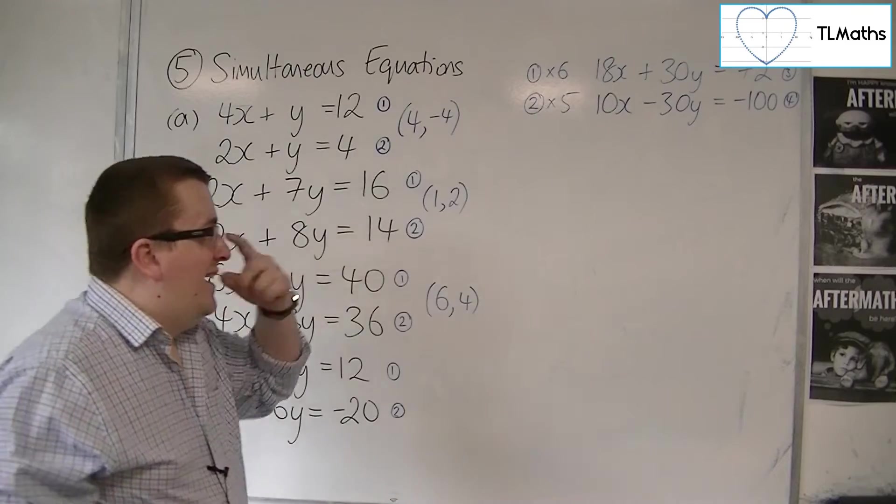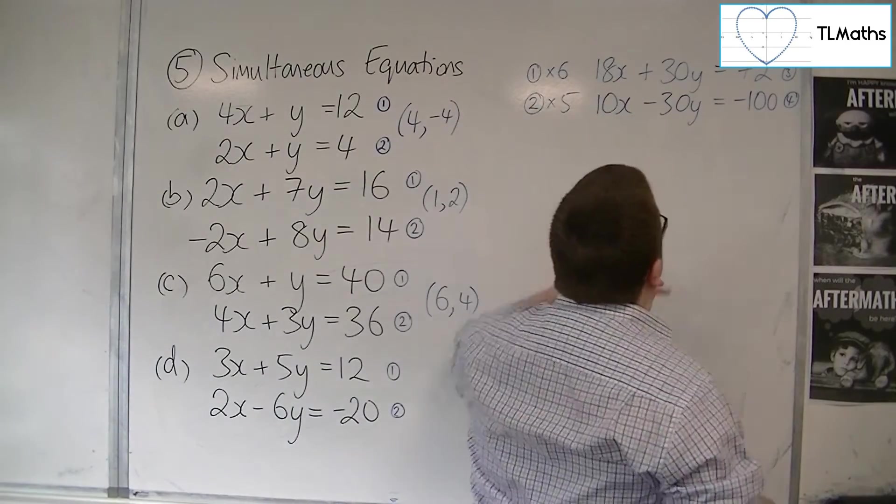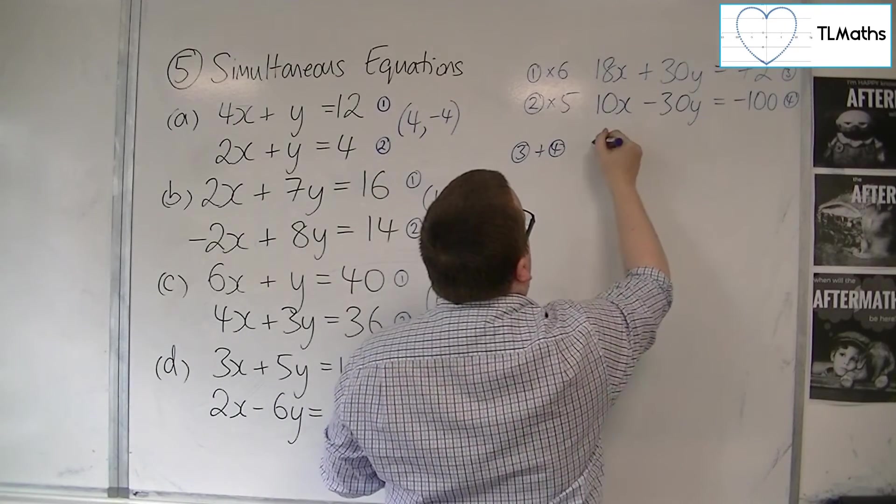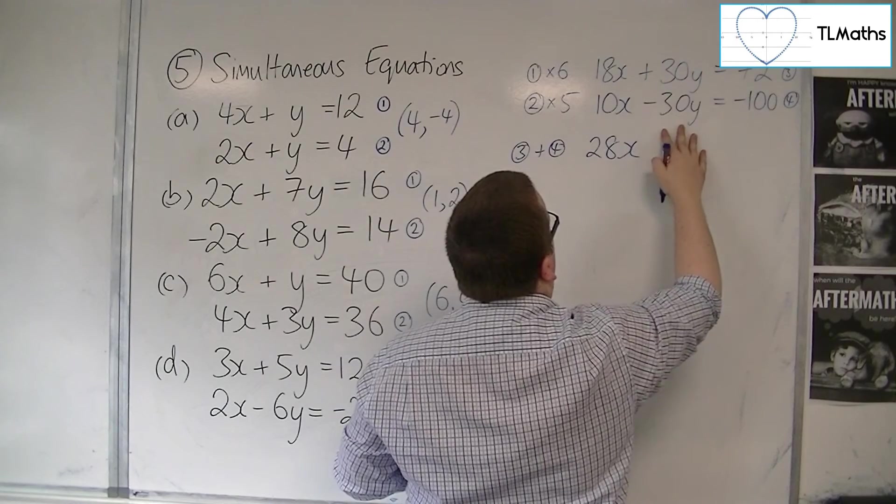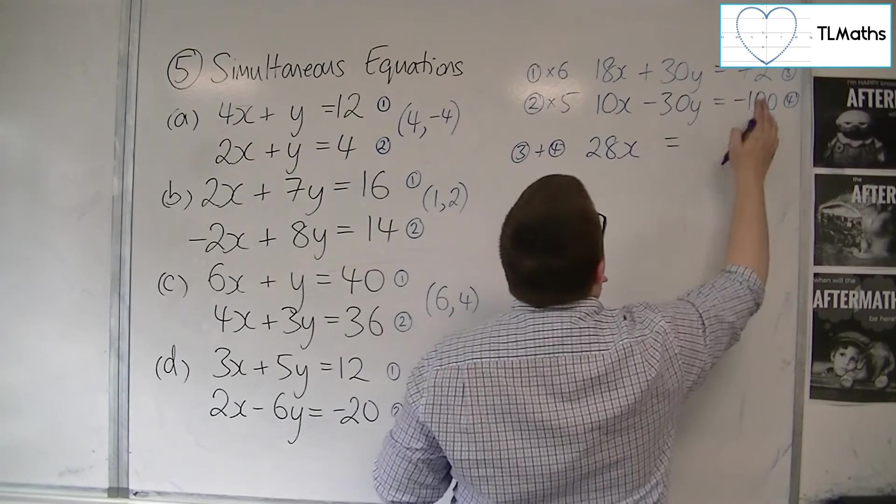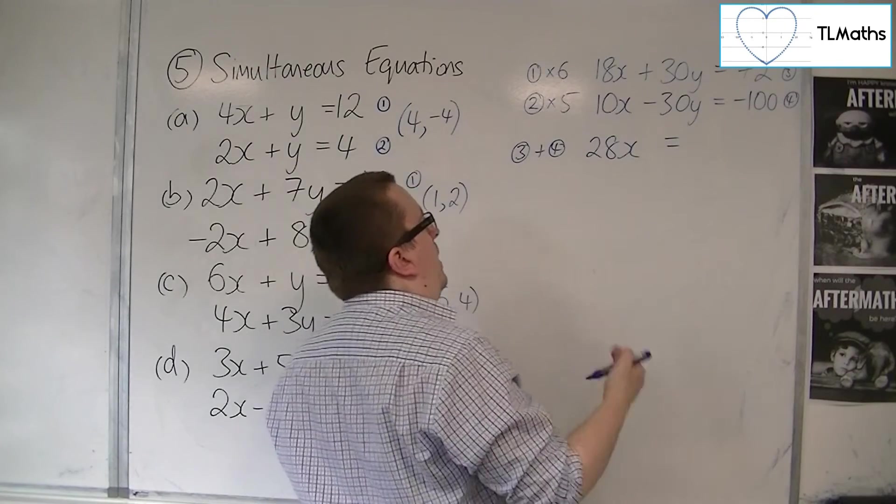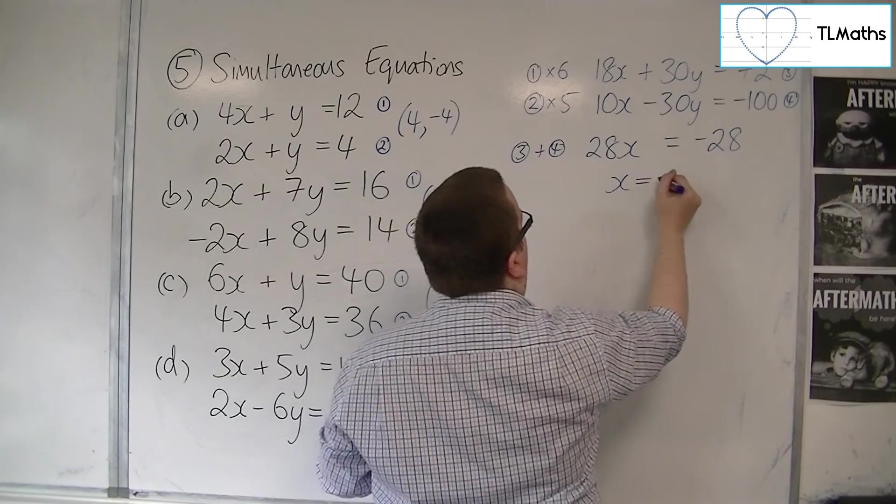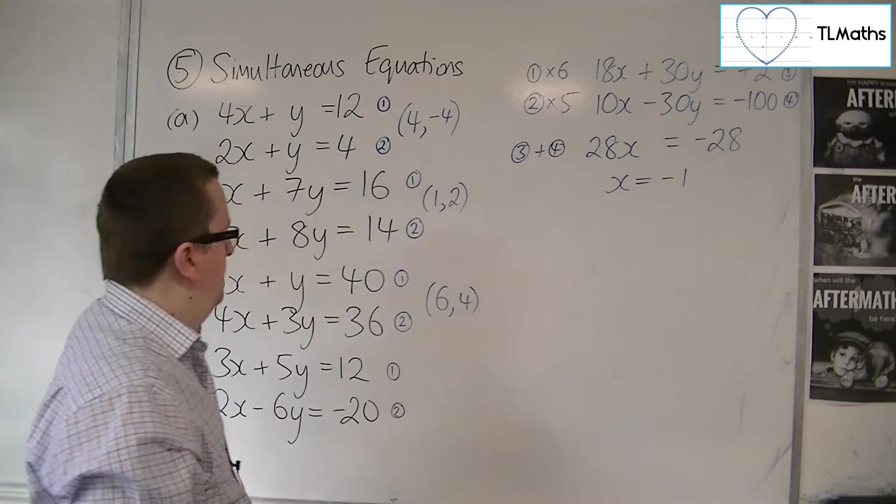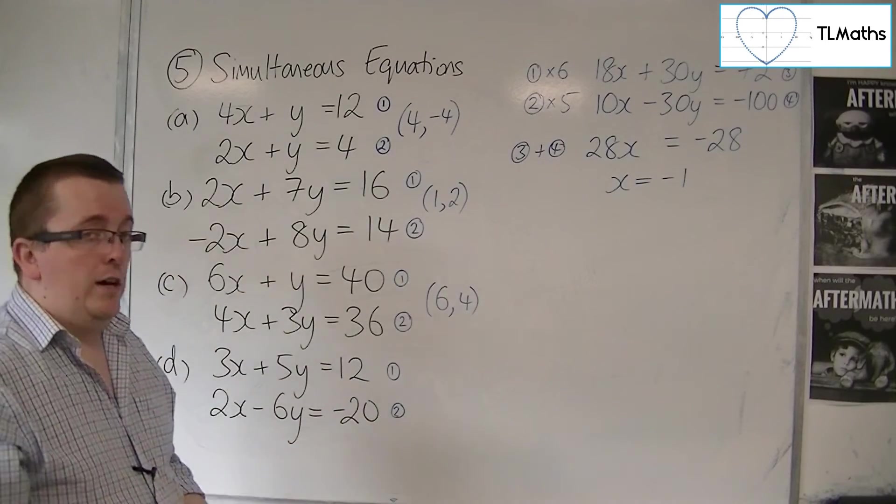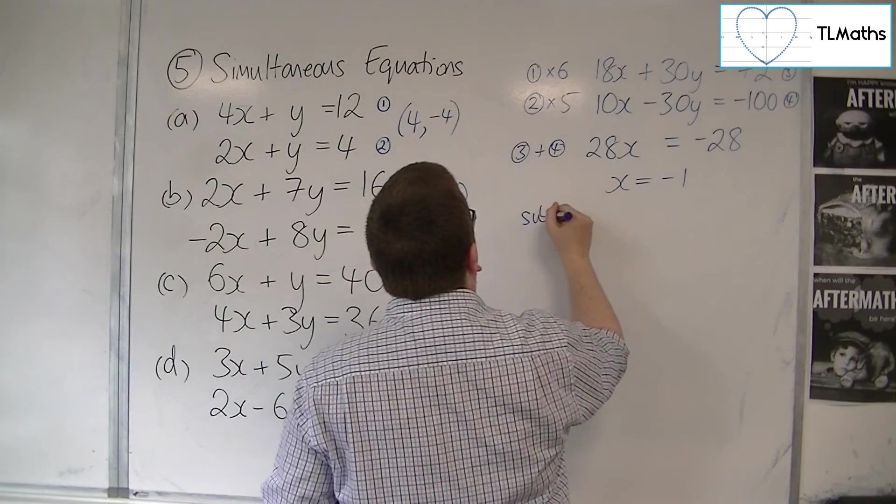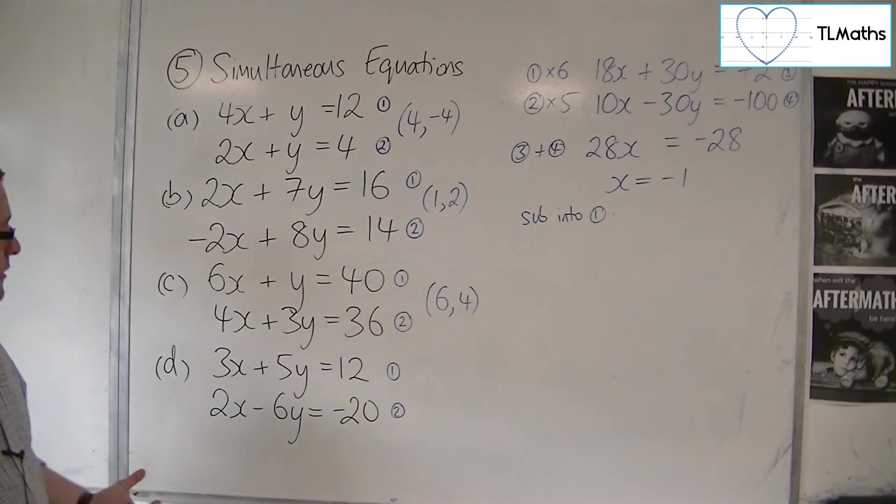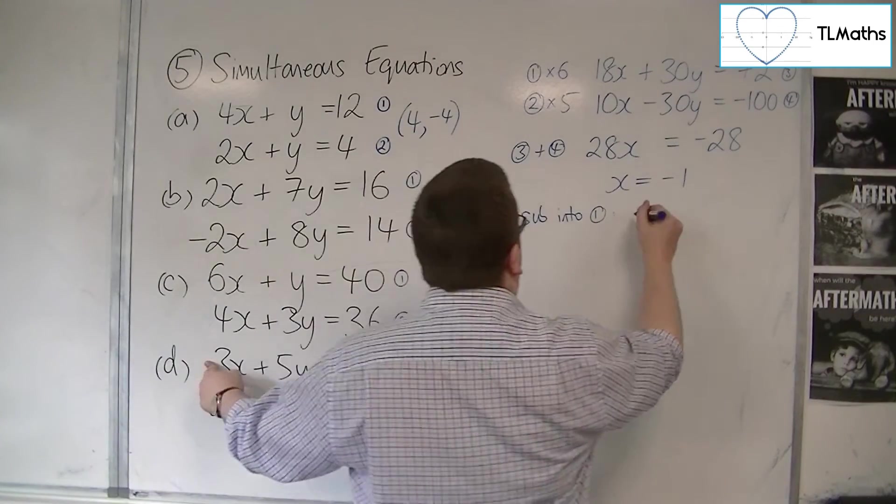So now I have two equations that I can add together to eliminate the y's. 18x plus 10x is 28x. 30y take away 30y is 0. 72 take away 100 is minus 28. We can then divide both sides by 28. And so x must be minus 1. Now I can substitute that into either of these two equations. I'm going to substitute into equation 1. The reason why is that the numbers look nicer to work with. 3 times minus 1 is minus 3.